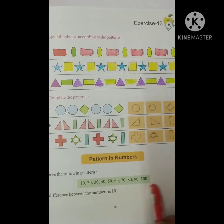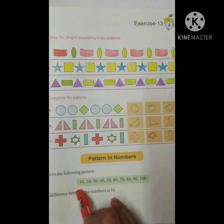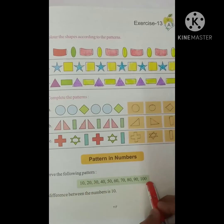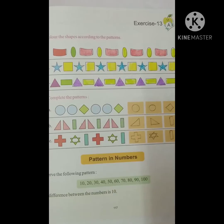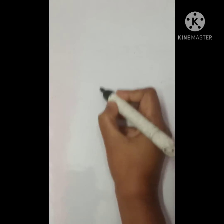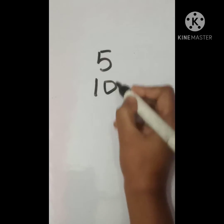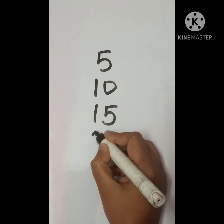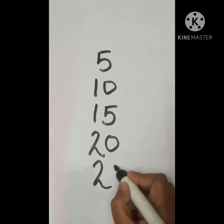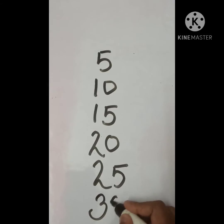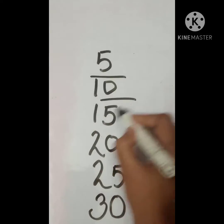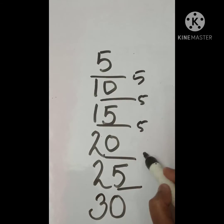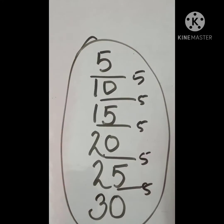Got it, students? So if we are given patterns, we have to solve them. For example, here I am writing 5, 10, 15, 20, 25, 30. If you have seen here, there are gaps of 5, 5, 5 — and this is also a table of 5. So this is also a given pattern. Got it, students?